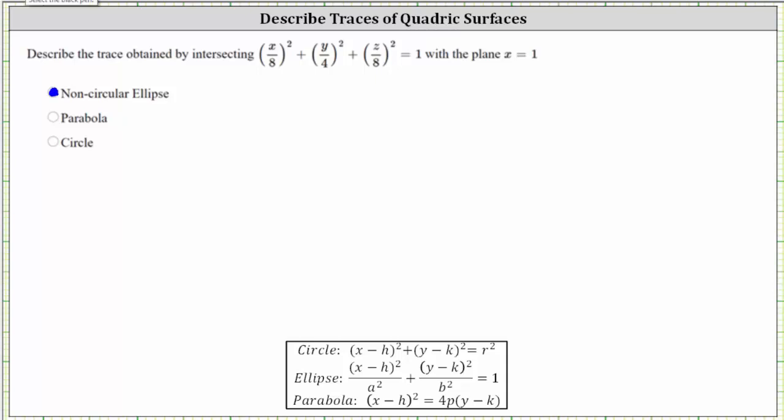If we substitute one for x, we have the square of 1/8, which is 1/64, plus the square of y divided by four, which is y squared divided by 16, plus the square of z divided by eight, which is z squared divided by 64, equals one.